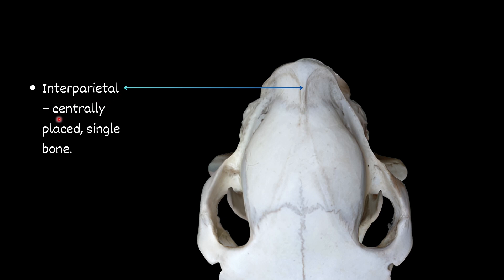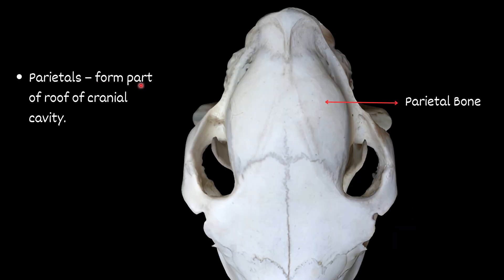The interparietal is centrally placed and is a single bone. The parietal forms a part of the roof of the cranial cavity.